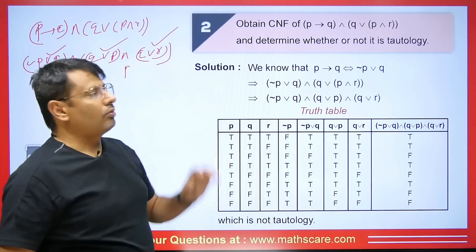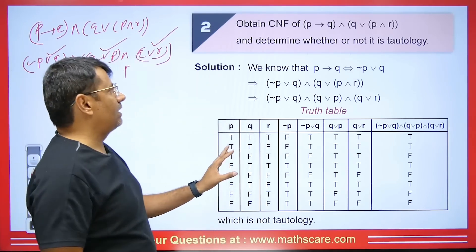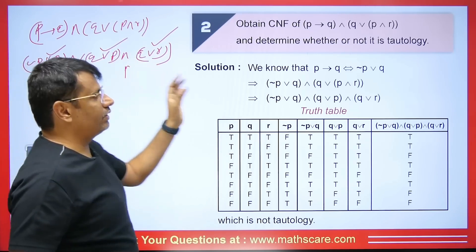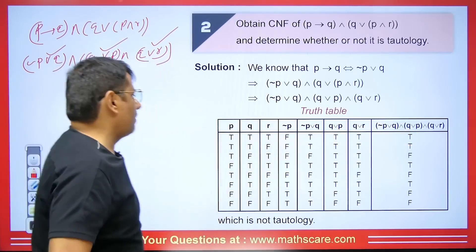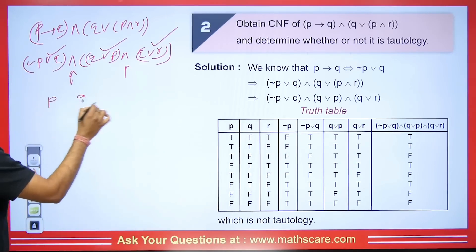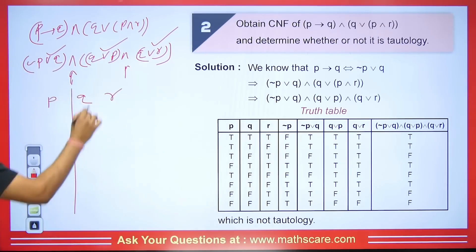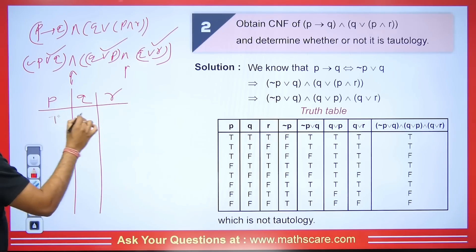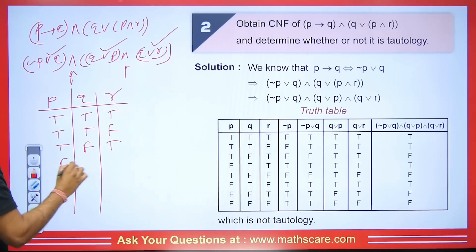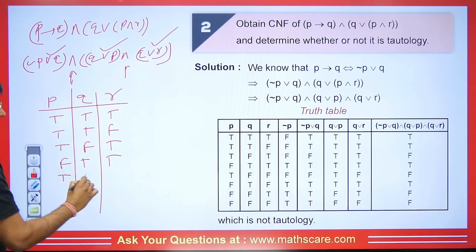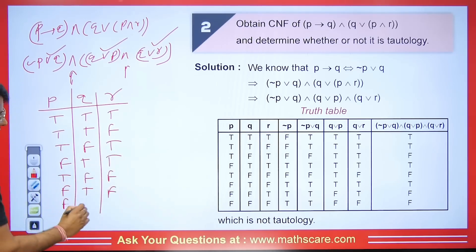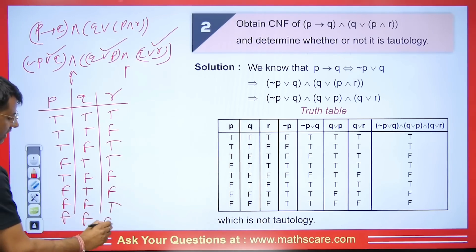Now we will make its truth table. We have three statements P, Q, R — so we write all 8 combinations: TTT, TTF, TFT, FTT, TFF, FTF, FFT, FFF.